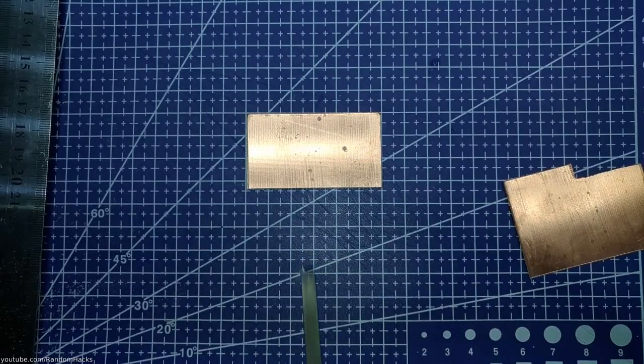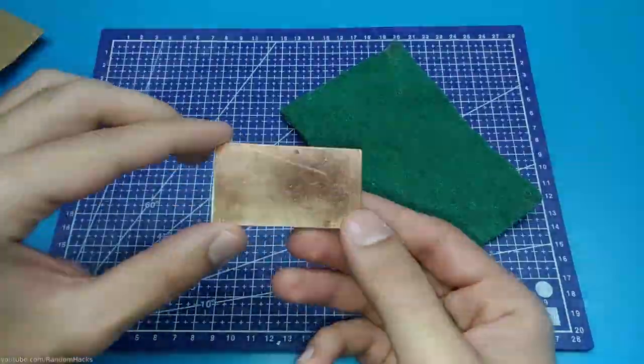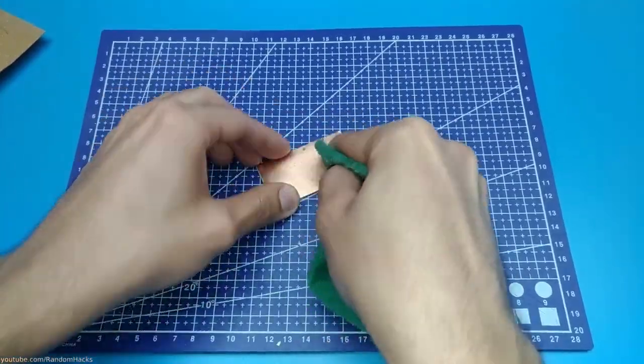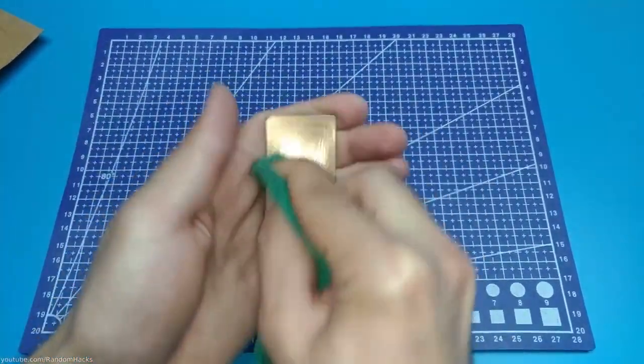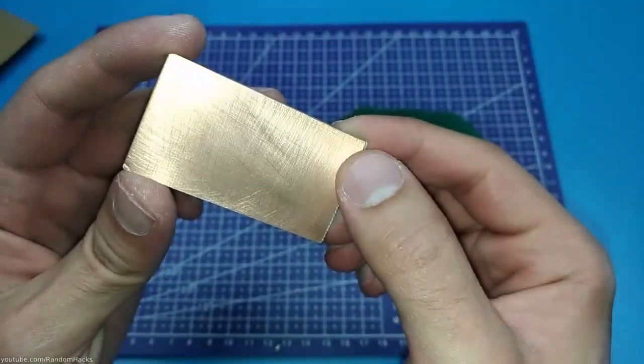You can use a file to give it a final touch. I then cleaned the copper clad with some of this abrasive fabric, mostly known as scotch brite. You can also use steel wool.